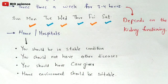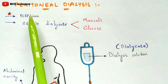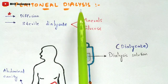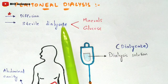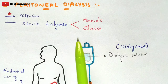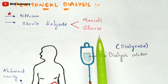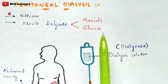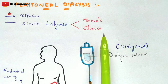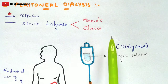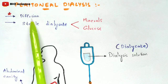Coming to the second type — Peritoneal Dialysis. This is an interesting type that many people select because it can be done at home rather than in hospitals, reducing stress on the patient. This process is performed by diffusion — an important point for examinations.